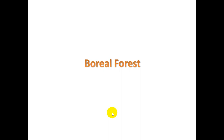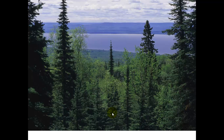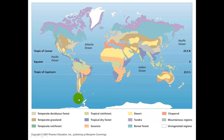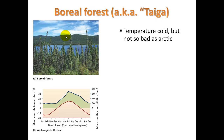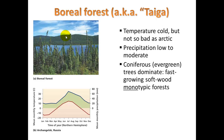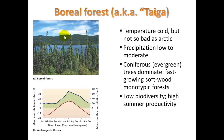Let's take a look at the Boreal Forests. Now we're starting to get large trees — just a little bit closer toward the equator. Temperature is cold but not as bad as the Arctic. Precipitation is low to moderate. We're seeing a lot of evergreen trees — fast-growing softwood monotypic forest, meaning we might have a forest that contains mostly one type of tree. Still low biodiversity and still high summer productivity. This is in the sub-arctic regions.